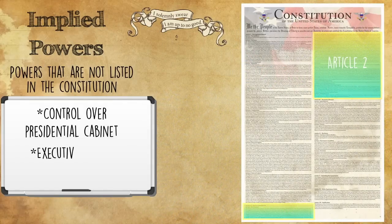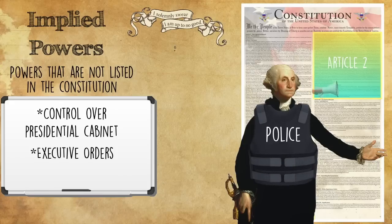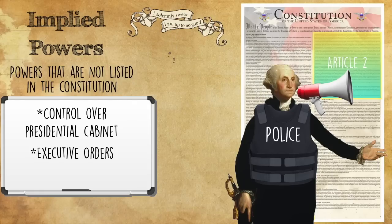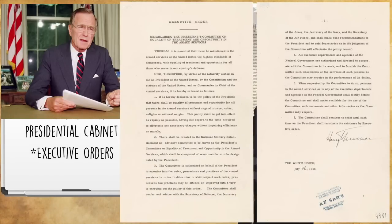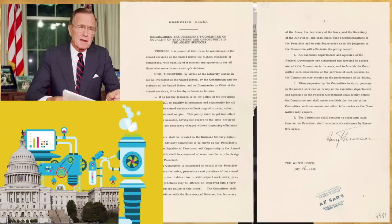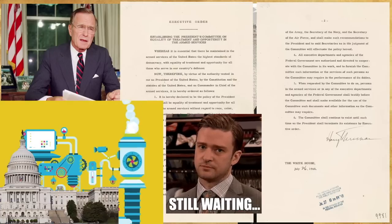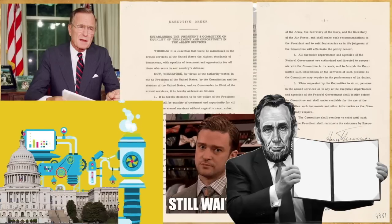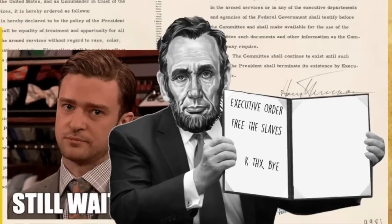Another important implied power is that of executive orders, and this one gets very complicated and tricky. We all know it's the president's job to enforce the law, but sometimes he can't do it if the laws don't let him. If that's the case, he can make an executive order to help him carry out the law. An executive order has the weight of a law, but it's not an actual law passed by Congress. One of the best examples is Abraham Lincoln's Emancipation Proclamation. Lincoln was waiting for Congress to make a law that would prohibit slavery in the United States, but that law never came because Congress was divided between North and South. So he made an executive order declaring that slavery should be prohibited, and began enforcing it.